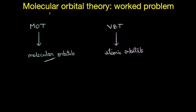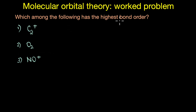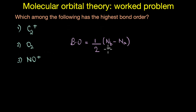In this video we are going to look at a problem on bond strength, or how to figure out the bond order of various molecules using molecular orbital theory. The question is: which among the following has the highest bond order? The options are C2+, O2, and NO+. Bond order can be calculated as half of (Nb minus Na), where Nb is the number of electrons in the bonding orbital and Na is the number of electrons in the anti-bonding orbital.